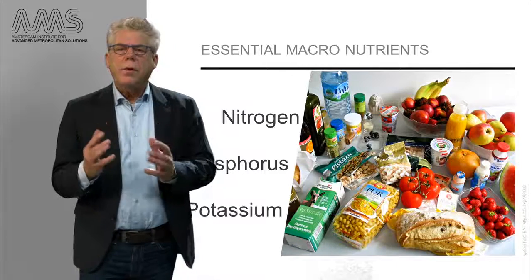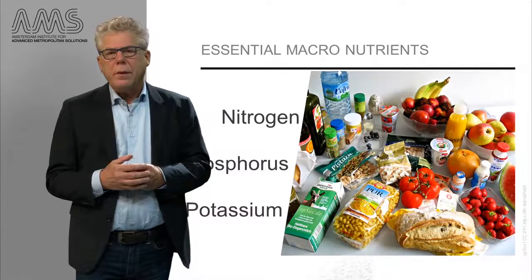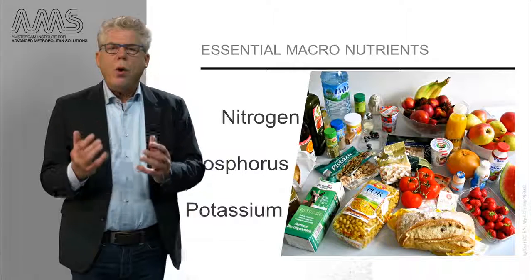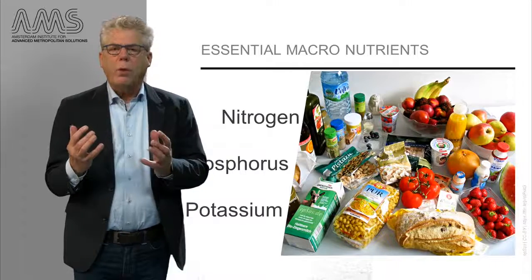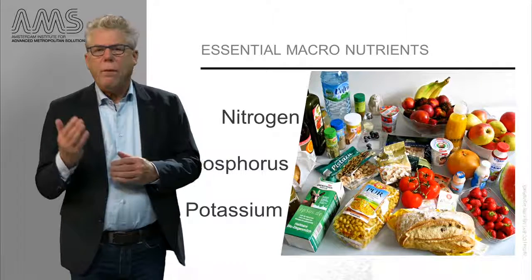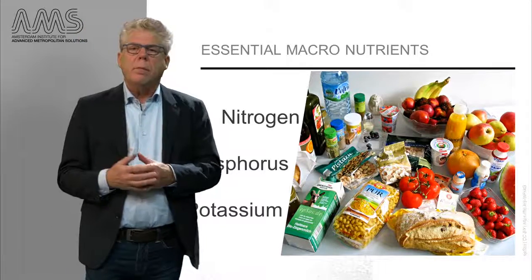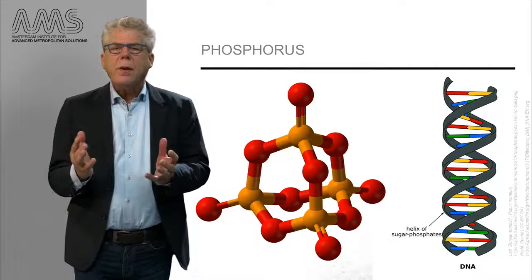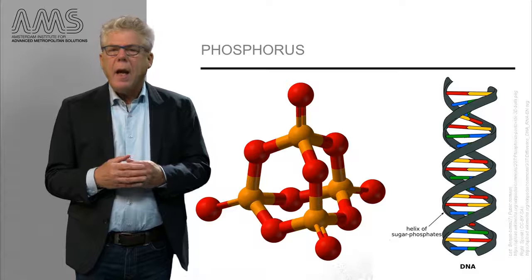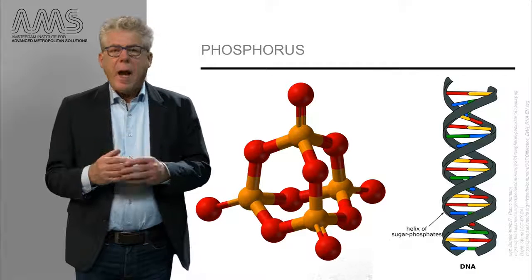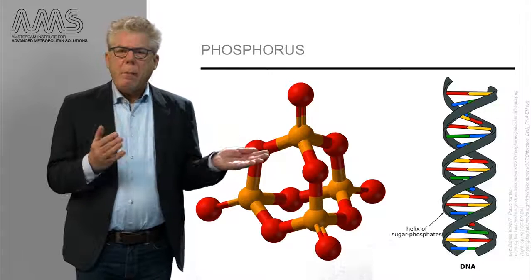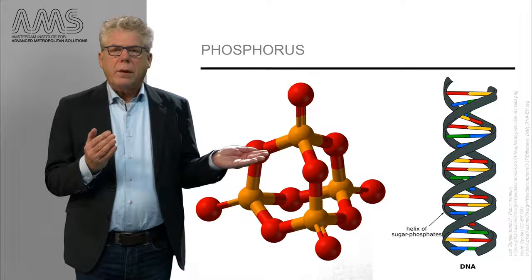The food you consume also contains nutrients. One group of nutrients are the so-called essential macronutrients: nitrogen, phosphorus and potassium. Nitrogen and phosphorus are essential elements in DNA, ATP — the energy mediator in living cells — cell membranes and protein structures.